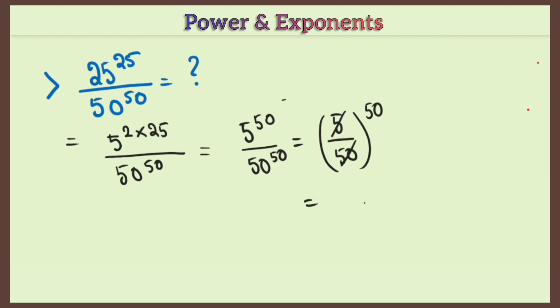That is 5 into 10, and the whole power is 50. You just do the reciprocal of it, that is 10 to the power minus 50. When you do reciprocal, the power will become negative.